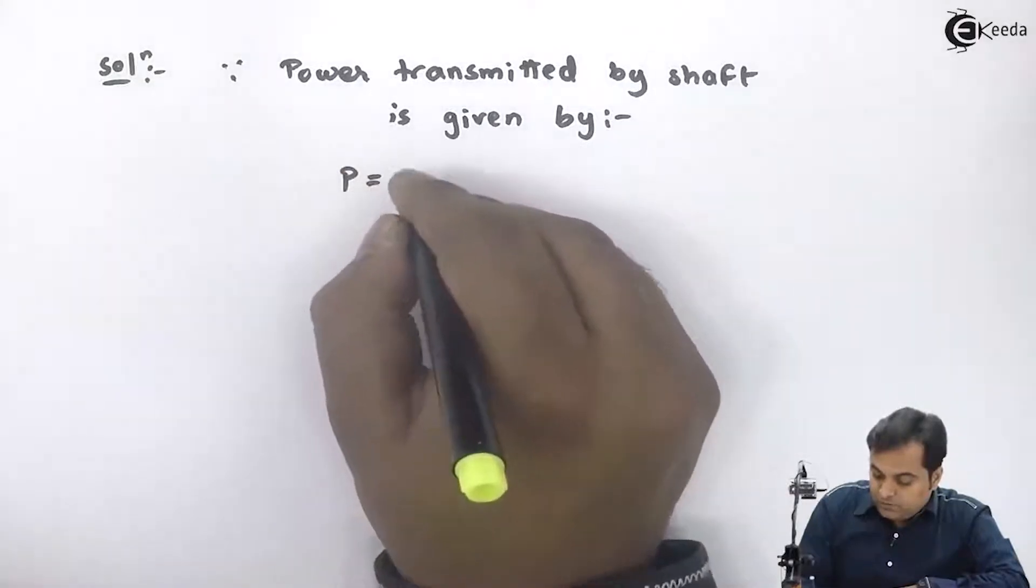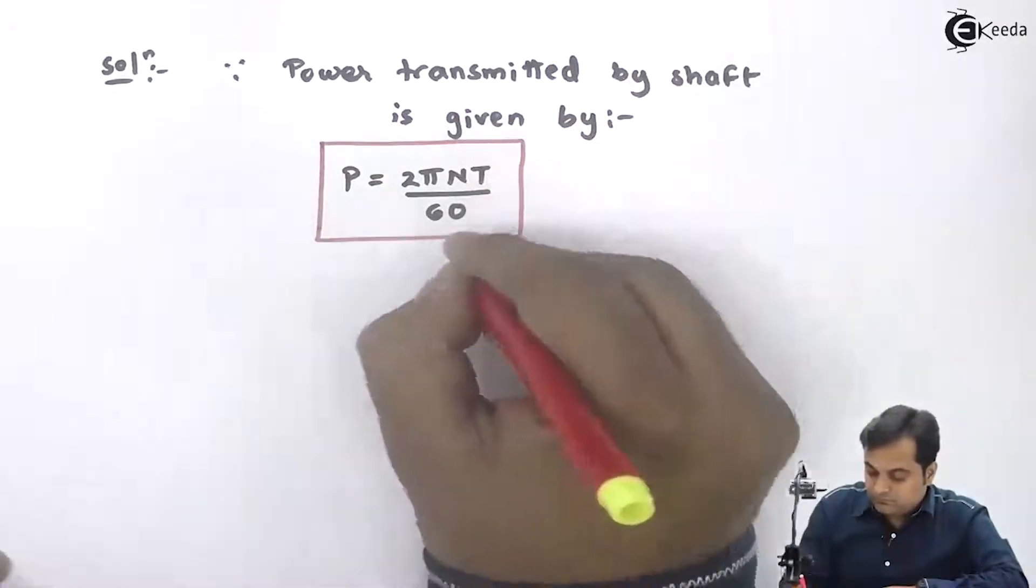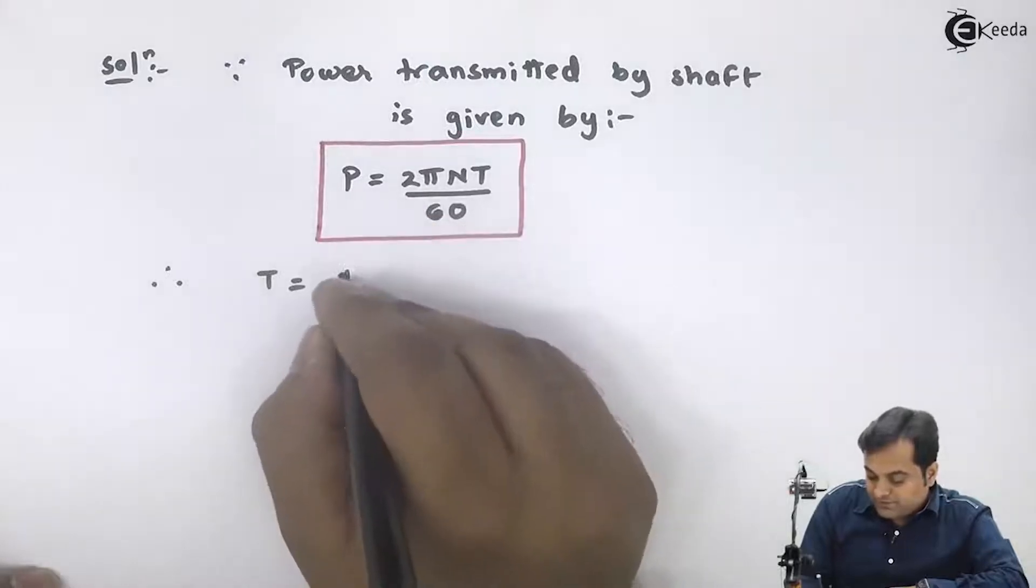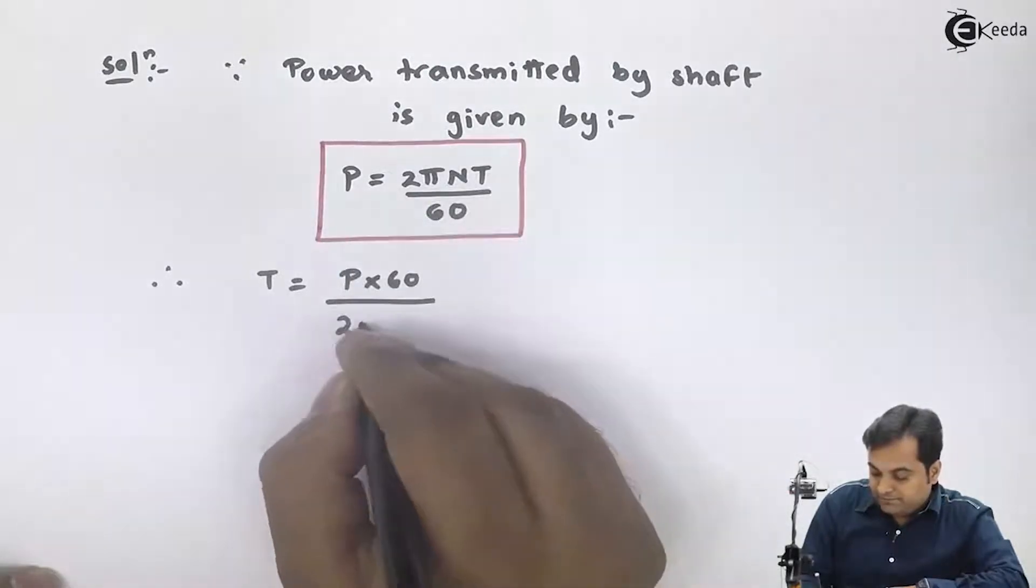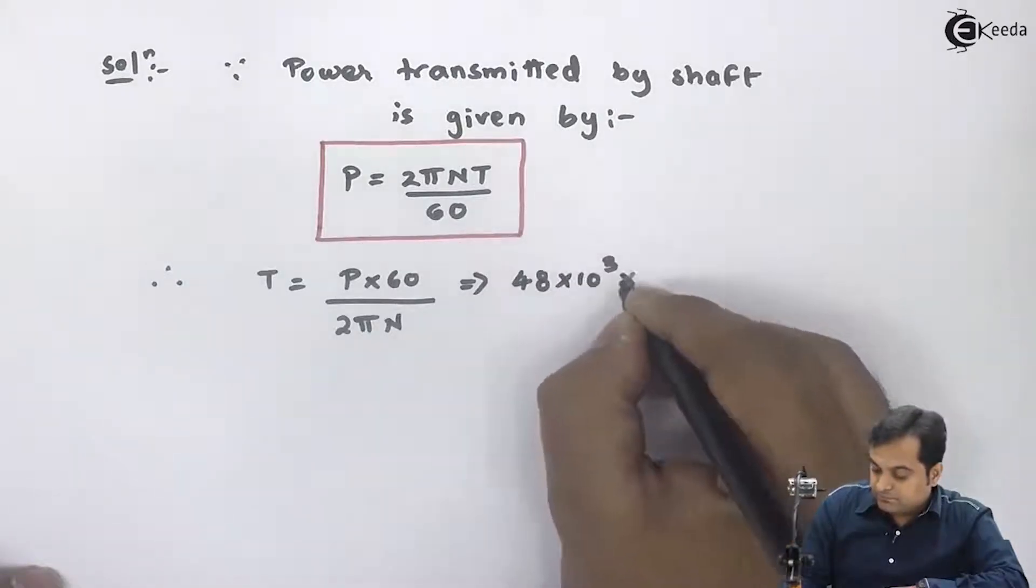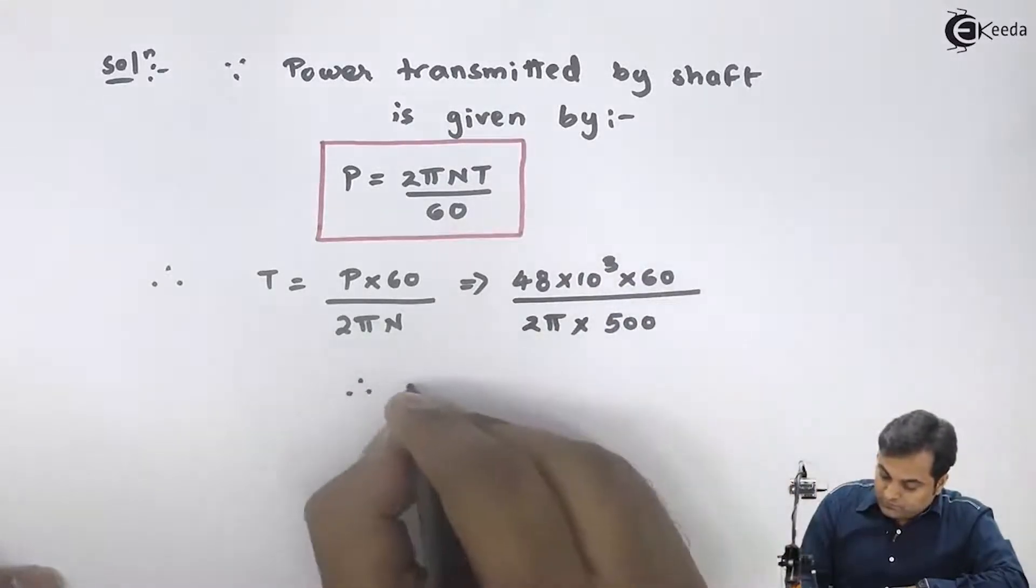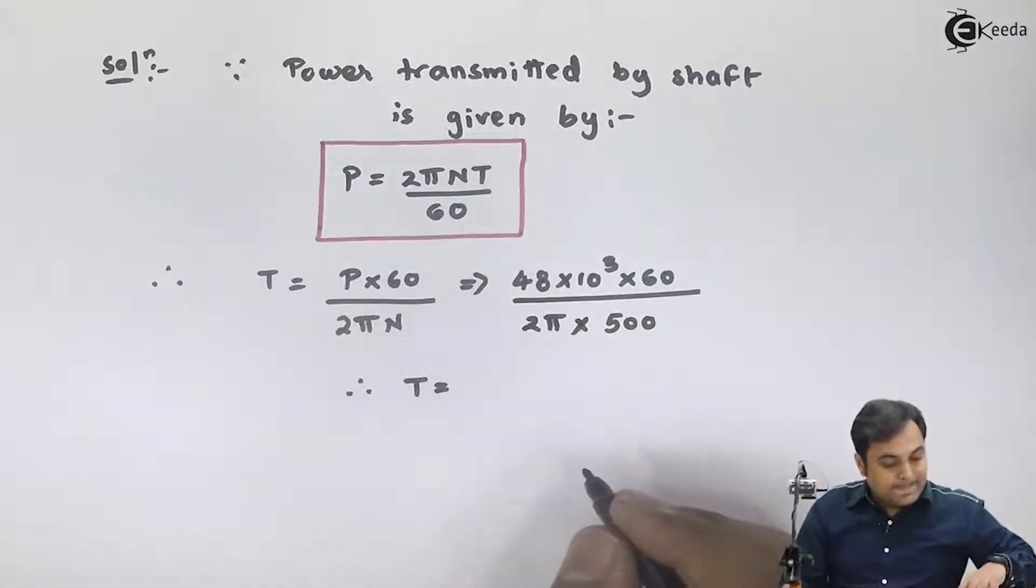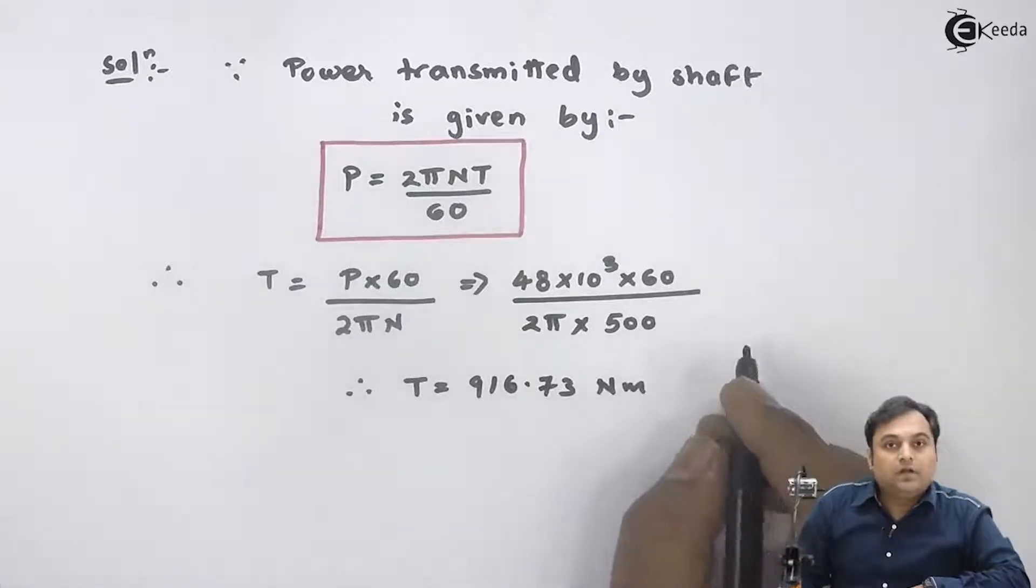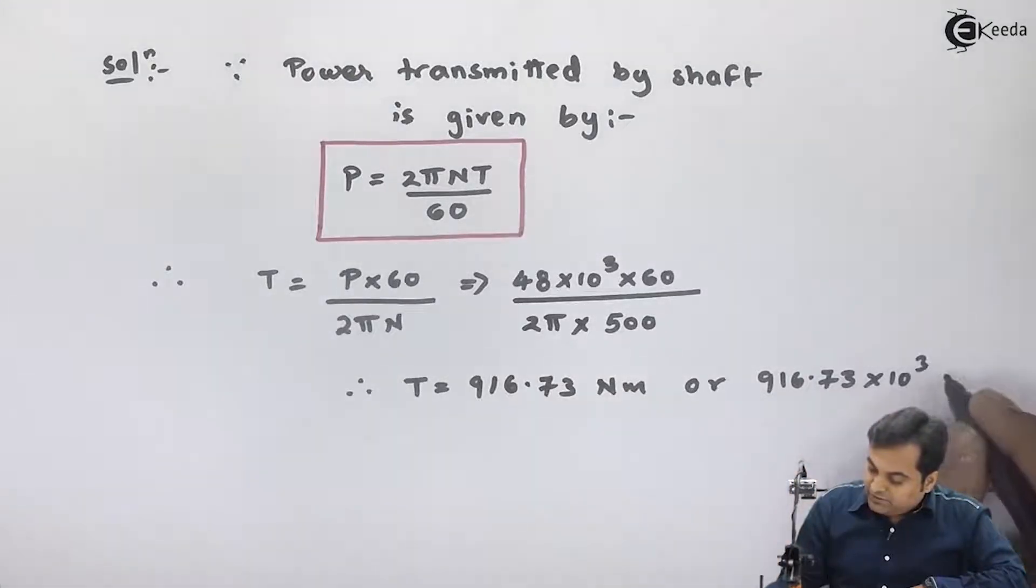Power is equal to 2πNT by 60. Therefore T equals P times 60 divided by 2πN. Power is 48 times 10 to the 3, rpm is 500. Therefore the torque value comes out to be 916.73 Newton meter, and this if I convert it will be 916.73 times 10 to the 3 Newton mm.